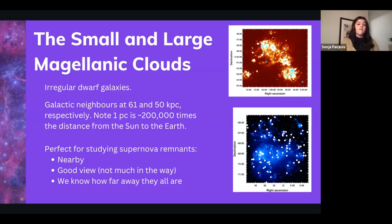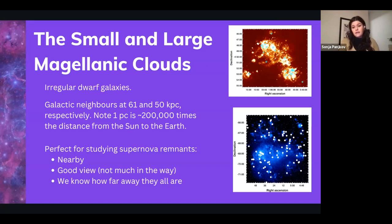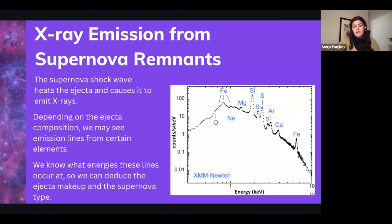Knowing the distance is crucial because understanding how big a supernova remnant is requires knowing how far away it is. The Magellanic Clouds are oriented face-on to us — like looking at a dinner plate from the front — so all remnants are at essentially the same distance. This gives us a very good constraint on their diameters and radii, whereas for galactic remnants distances are harder to determine and so their sizes carry higher uncertainties.